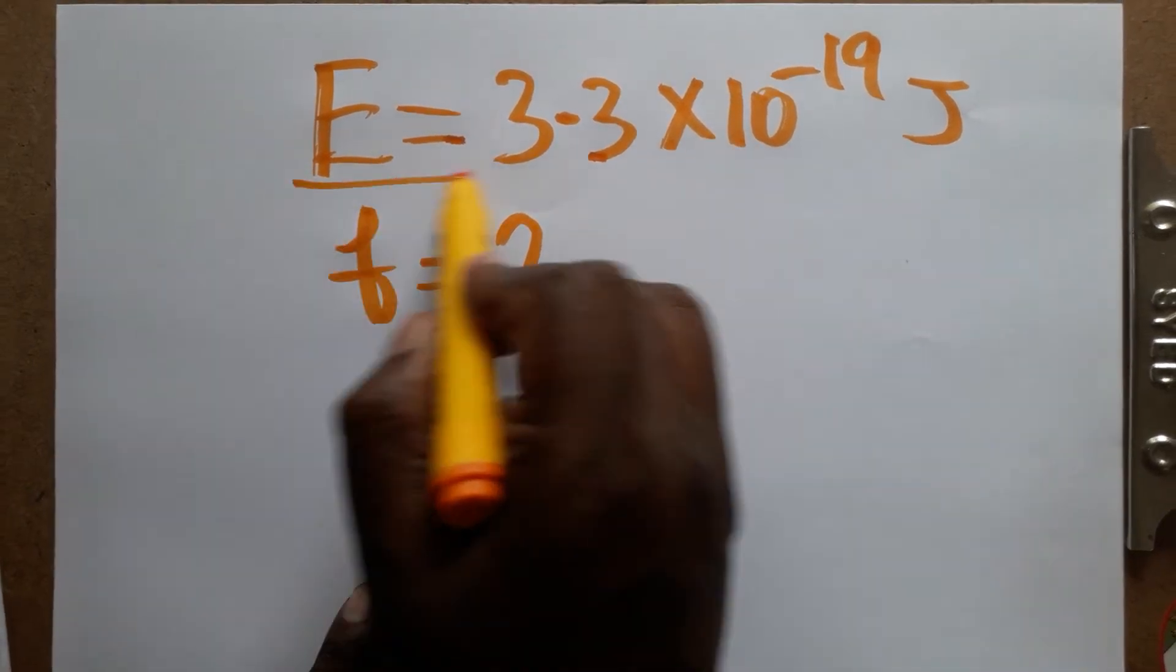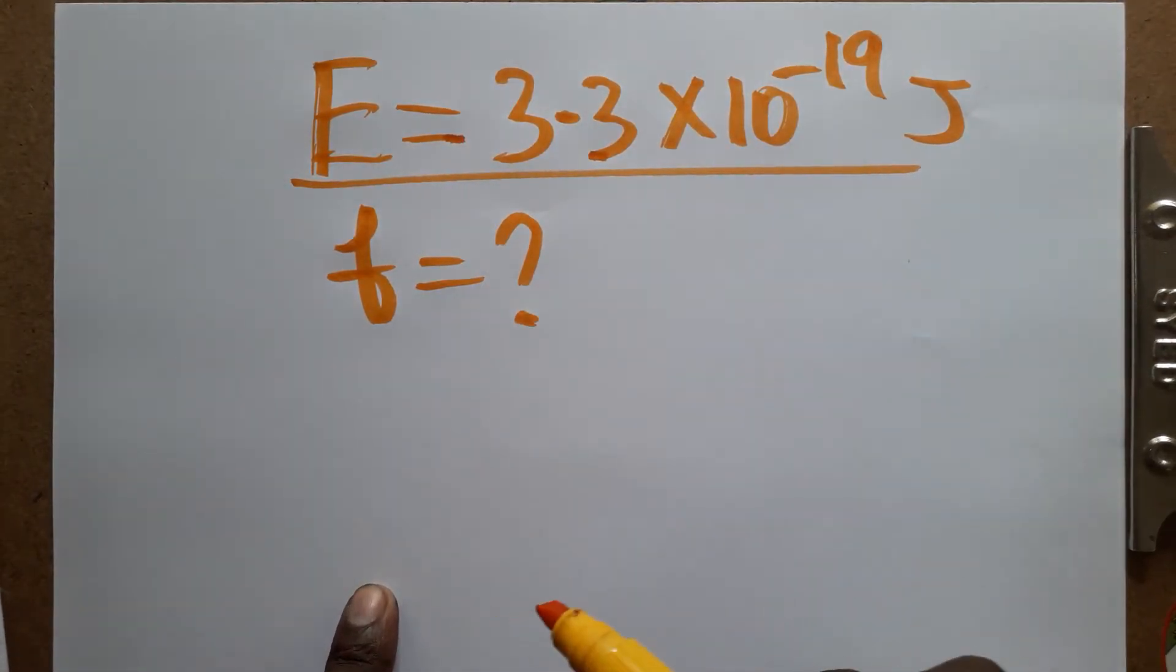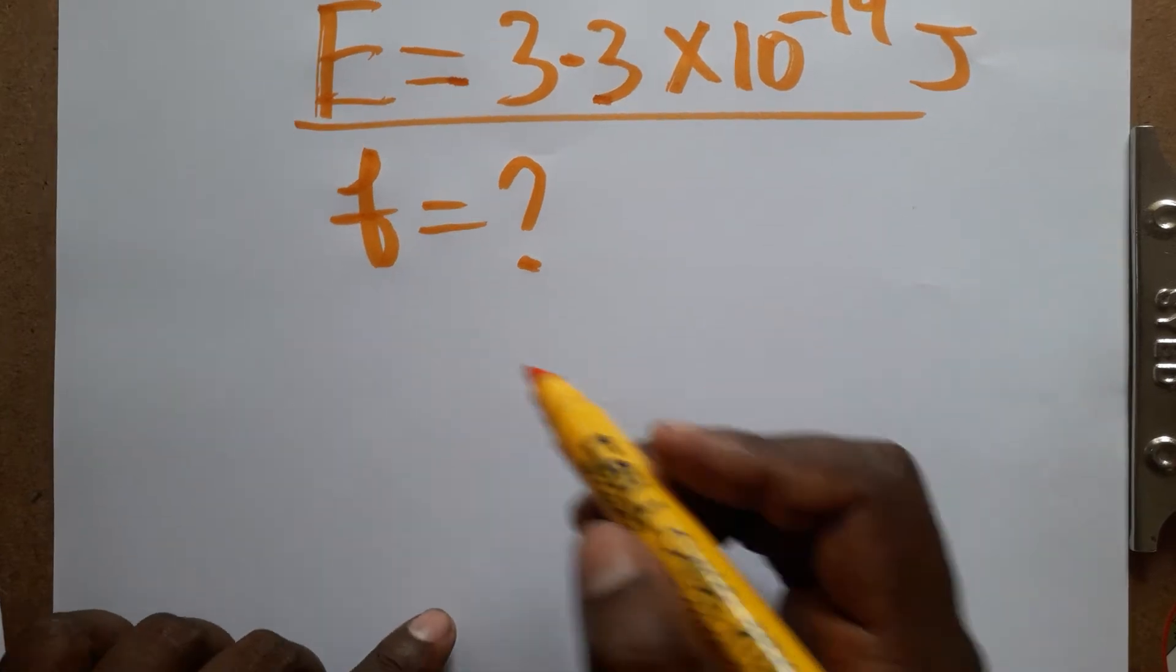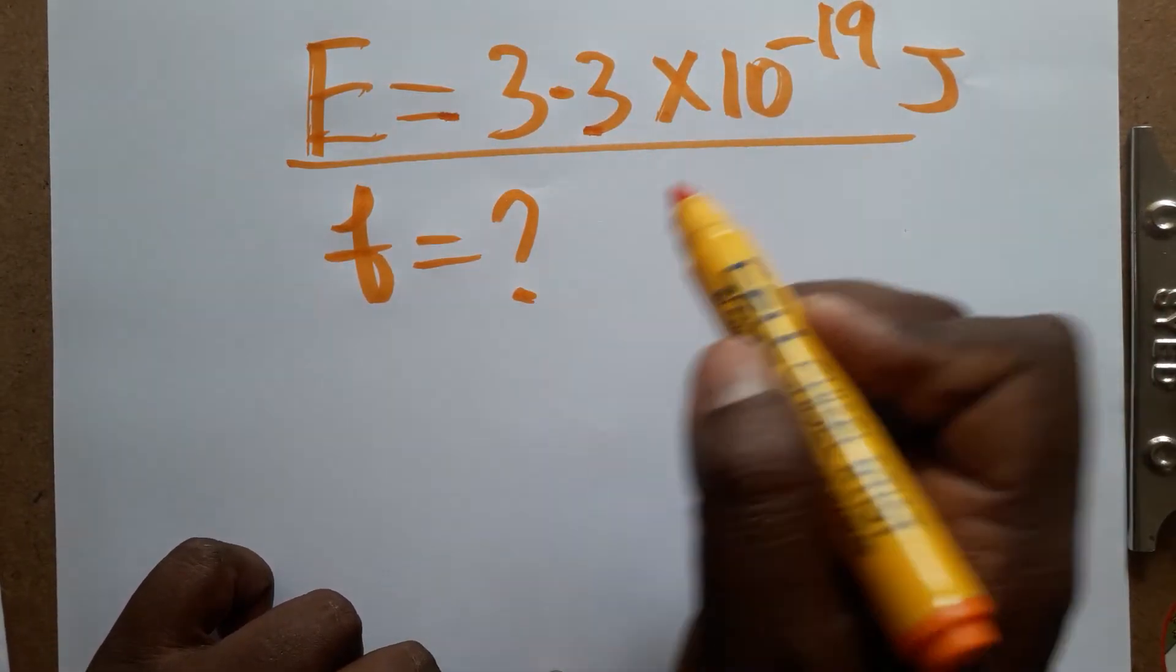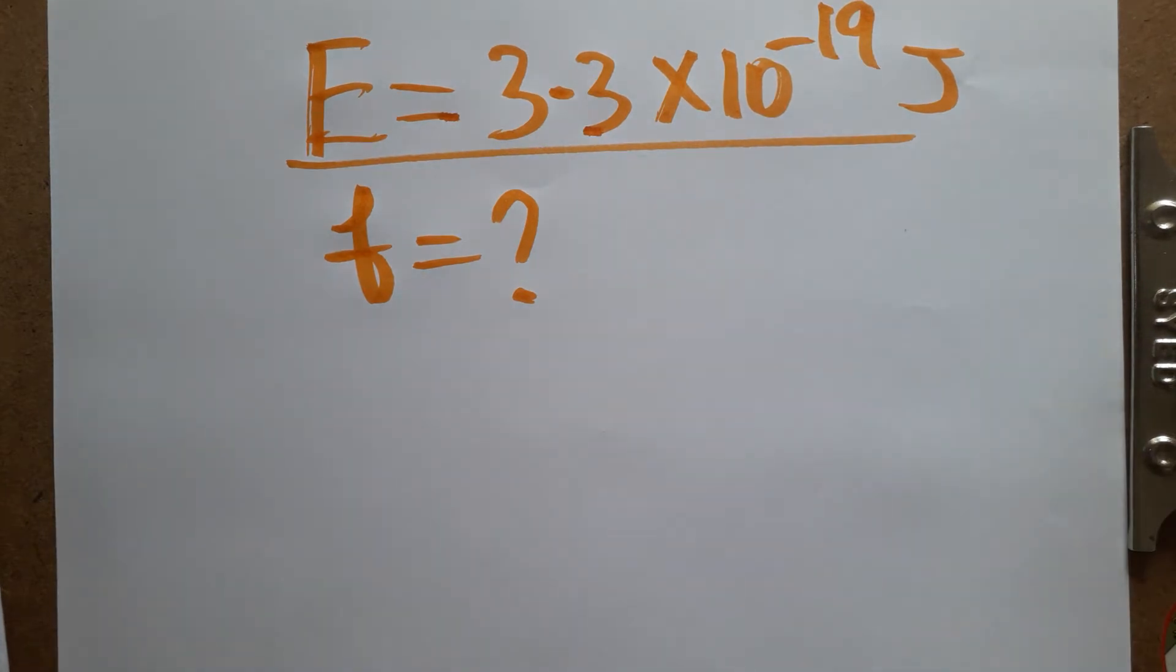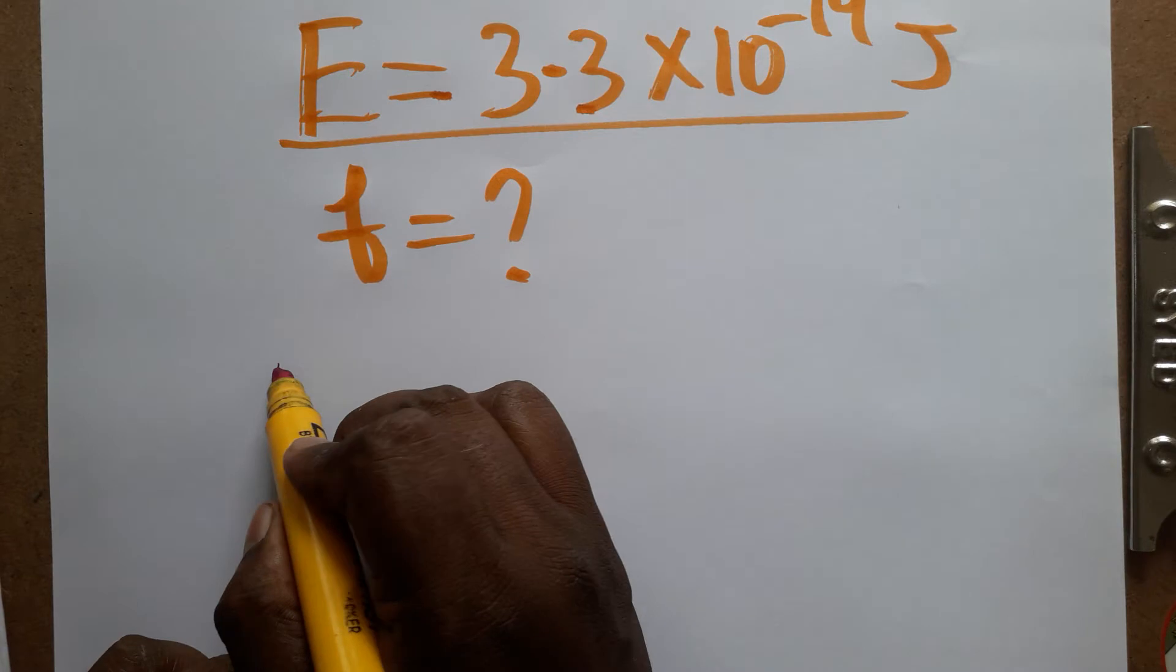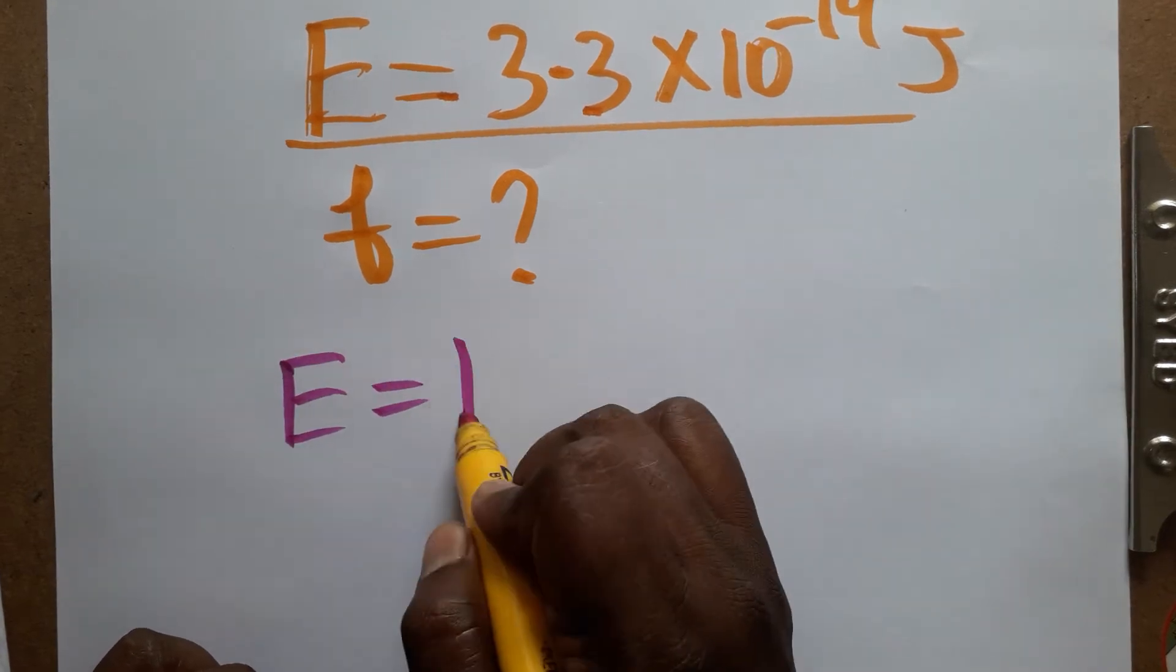Today we are going to calculate from energy to frequency, how we can find the energy to the frequency. So energy is given as 3.3 into 10 power minus 19 joules. Frequency is the question mark. What is the relation we can use? We can use energy is equal to Planck constant times frequency.